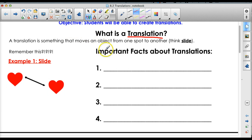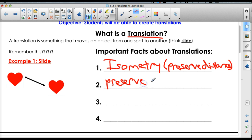So let's look at some important facts about translations. The first important fact is that they are an isometry. All right, now what's that mean? That means they preserve distance. All right, so remember that. The second important fact is that they preserve orientation.